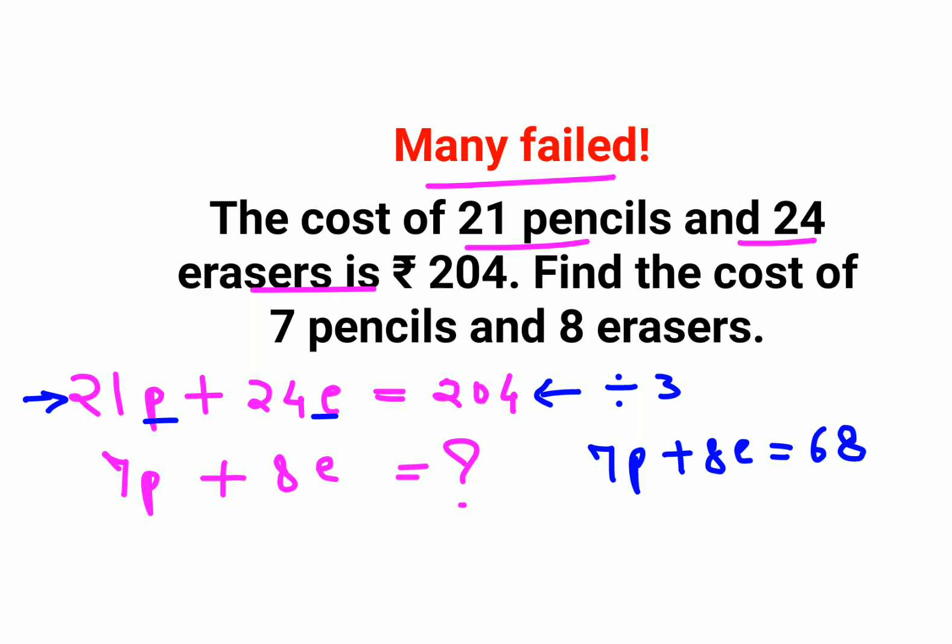Now please understand, this is exactly what they were looking for. So here you didn't have to do anything. Just divide the current values by 3 each and you will get your value for 7 pencils and 8 erasers.